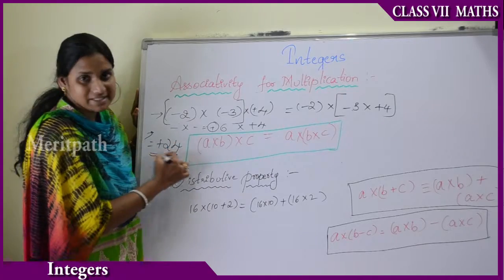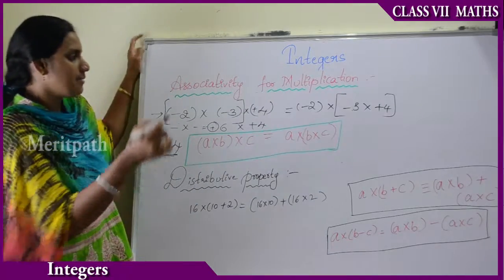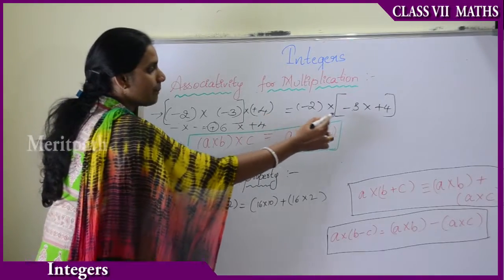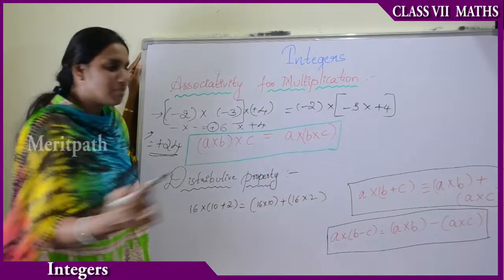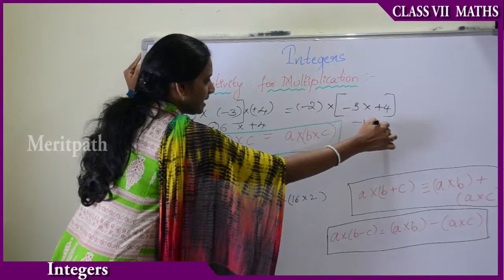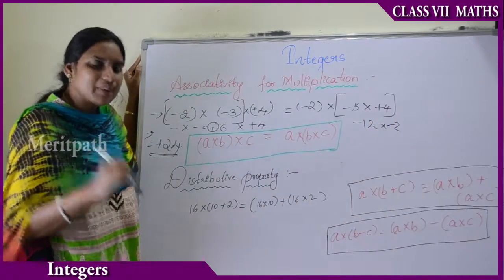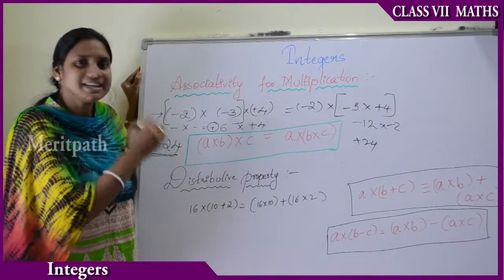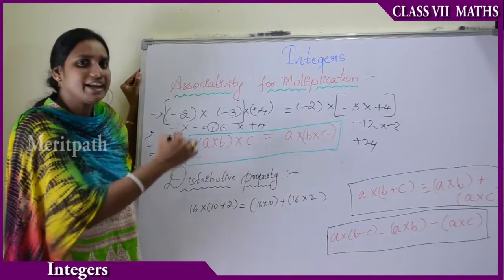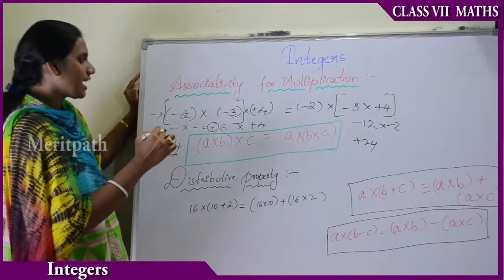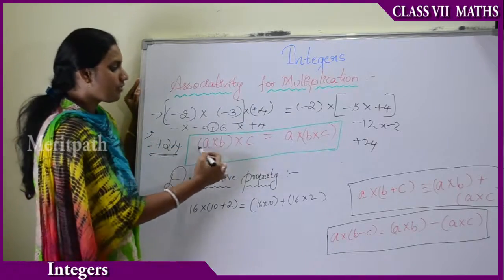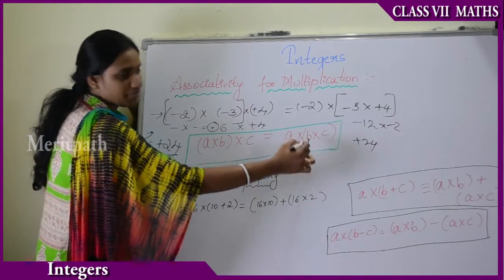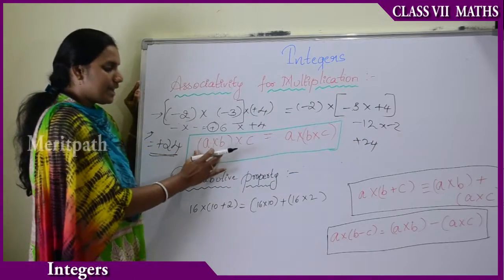On the LHS we get plus 24. On the right-hand side, minus 3 into plus 4 equals minus 12, and minus 12 into minus 2 equals plus 24. So we are getting the same result on LHS and RHS, and we can conclude that this is the associative property.